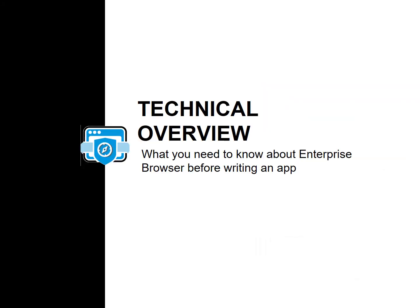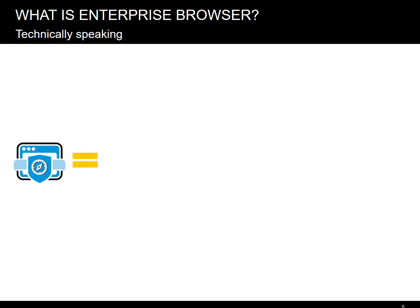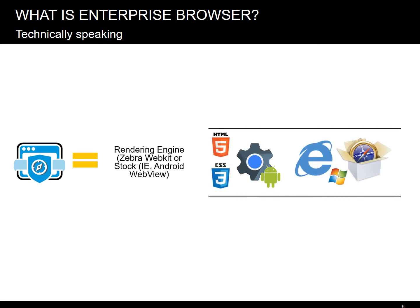Let's begin with the technical overview of the Enterprise Browser. So, what is Enterprise Browser, technically speaking? First, we took a choice of browser rendering engines. On Android, you'll want to use the native WebKit-based WebView, but on Windows, you can choose between StockIE or our own cross-platform build of WebKit. That will give you the HTML rendering power compared to or exceeding the native OS capabilities.